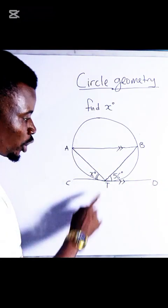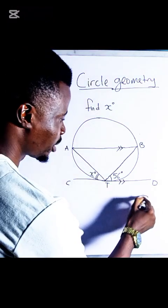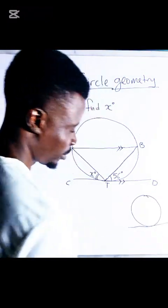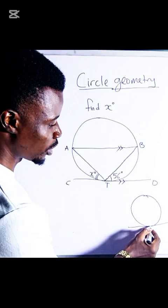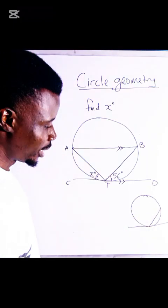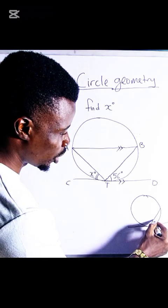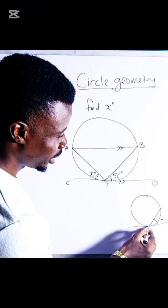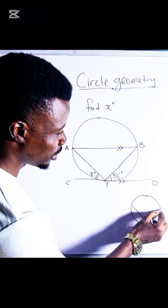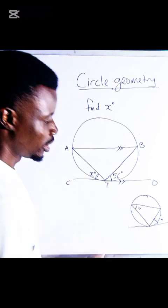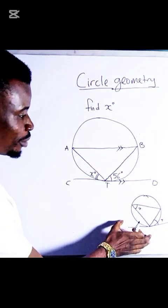There's a theorem that says if a line touches a circle and from the point of contact a chord is drawn, then the angle which this chord makes with the tangent to the circle is equal to the angle in the alternate segment. I'm going to use this theorem to solve this.